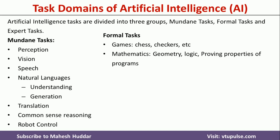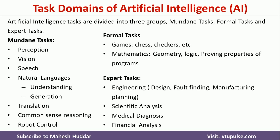Coming to the last category, expert tasks. Examples for expert tasks include engineering problems, tasks where we want to design something new — a system, concept, or whatever it may be — finding faults in a given system, and planning manufacturing processes. Similarly, scientific analysis, medical diagnosis, and financial analysis fall under expert tasks.